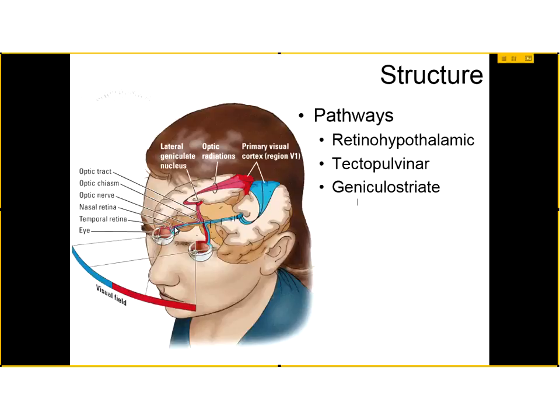The geniculostriate pathway processes form, movement, and color — the three aspects of our visual world we most commonly think about. In contrast, the retinohypothalamic and tectopulvinar systems handle other aspects of our visual world we may be less aware of, such as circadian regulation and eye movement coordination.